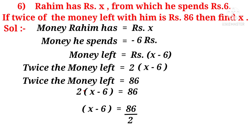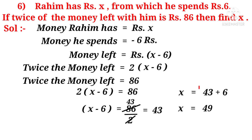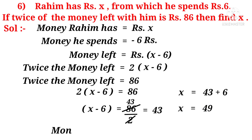X minus 6 is equal to 86 by 2, because multiplying 2 when transposed to the right hand side, it becomes divided by 2. On simplification, 86 by 2 is equal to 43. Now, X is equal to 43 plus 6, because minus 6 transposed becomes plus 6. So, X is equal to 49. Money Rahim has, X equals rupees 49 is the answer.